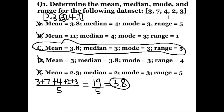Lastly, let's find the range. To find the range, we want to identify the biggest number in the data set and the smallest number. We already put the numbers in order, so this shouldn't be too hard. The biggest number is seven, the smallest number is two. The range equals seven minus two, and seven minus two is five, which matches with answer choice C. So answer choice C is the correct answer.